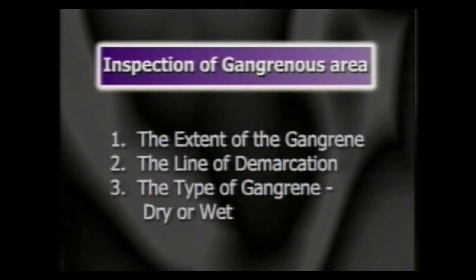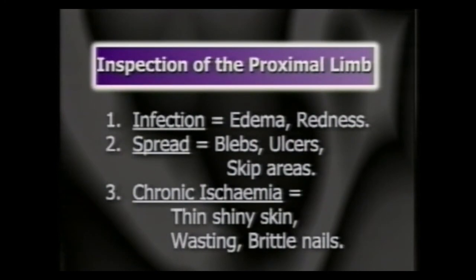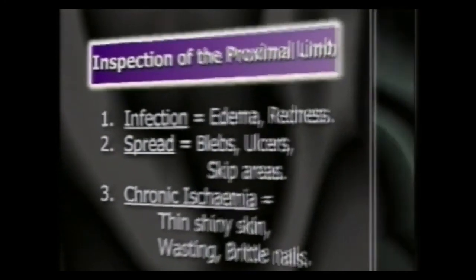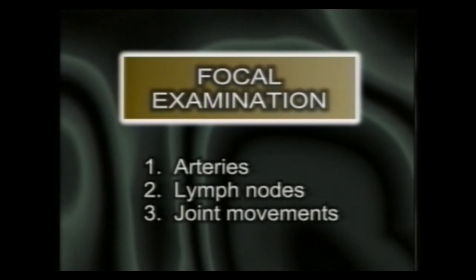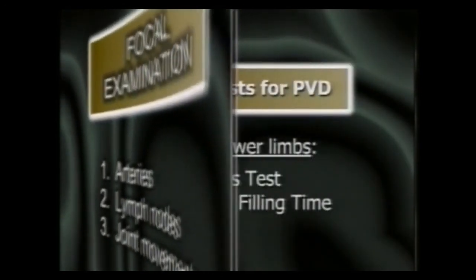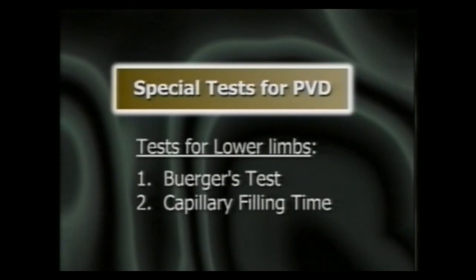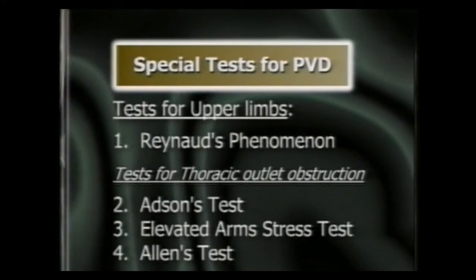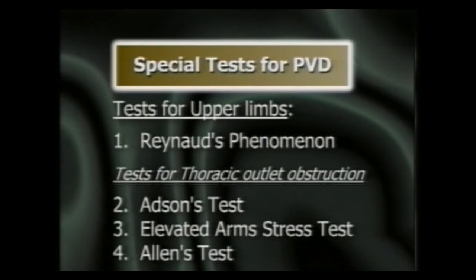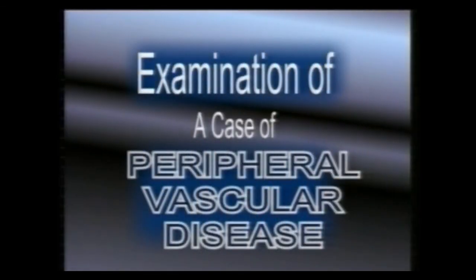To conclude, we started the examination of a case of ischemic limb with a careful inspection of the gangrene and the ischemic limb. Then we examined the arteries, lymph nodes and the movements — palpating the arterial pulse at various levels and auscultating over it for a bruit. Lastly, we performed the special tests for peripheral vascular disease: in the lower limb, Buerger's test and capillary filling time; in the upper limb, Raynaud's phenomenon, Adson's test, Elevated Arms Stress Test and Allen's test. This completes the study of examination of a case of peripheral vascular disease.